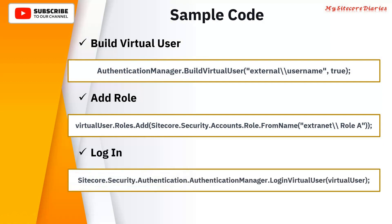Then, how to log in? Again you use AuthenticationManager. AuthenticationManager has a function for LoginVirtualUser. You provide your virtual user to that function and it will log in that user within Sitecore. This virtual user is in memory, not in the Sitecore database. But once you log in, it will be treated as a real user, and whatever the roles and permissions applied in Sitecore will be applied to that user. Going back to our original use case, the authenticated user can access both the public and private videos, because when you created Role A you gave access to the private videos — so that user will also have access to the private videos. This is the sample code for a virtual user and how to use it.